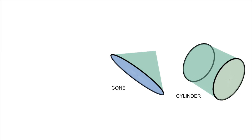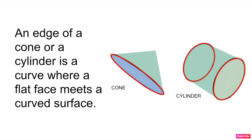And speaking of edges, here are a cone and a cylinder, and their edges are a little bit different. An edge of a cone or a cylinder is where a flat face meets a curved surface. So a cone has one edge, and a cylinder has two.